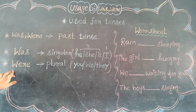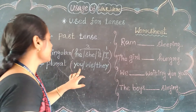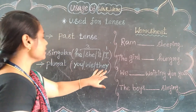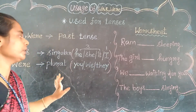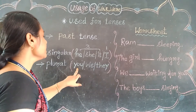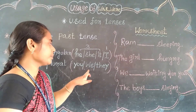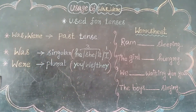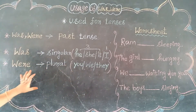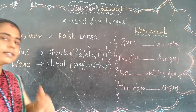Then, 'were' is used in plural form. And to which person? You, we, they — that is for three persons it is used. See, 'you' is the second person, 'we' is the first person, 'they' is the third person. For these three also it is used, and especially for plural form.